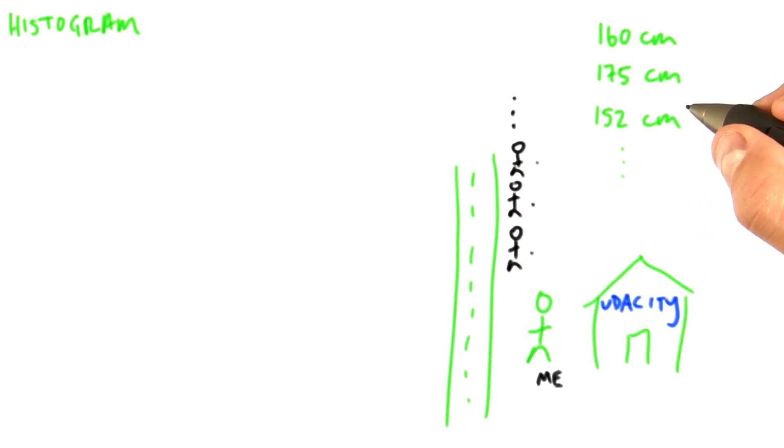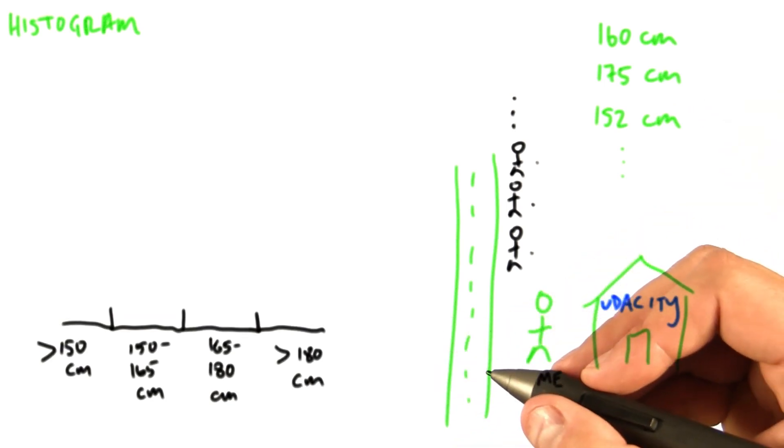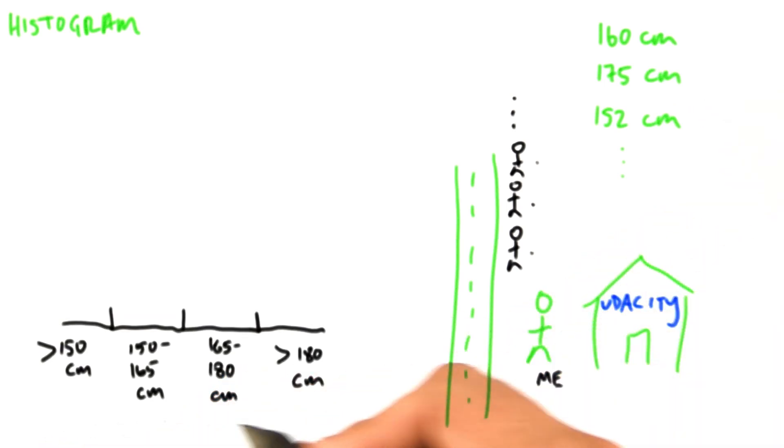Instead, what I'll do is create a histogram. I'm going to specify a number of bins. For instance, four bins. Shorter than 150 centimeters, between 150 and 165 centimeters, between 165 and 180 centimeters, and taller than 180 centimeters.